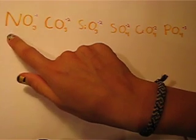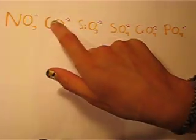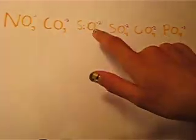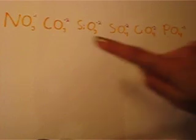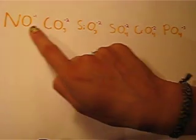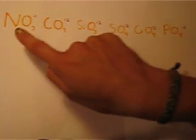This also helps you memorize the charges because they still go negative one, negative two, negative two, negative two, negative two, negative three. So: knob, cob, SIOB, soy, croi, poi — one, two, two, two, two, three. I hope this helps.